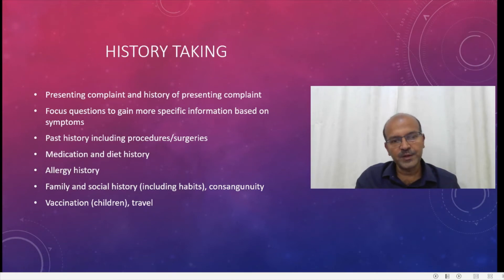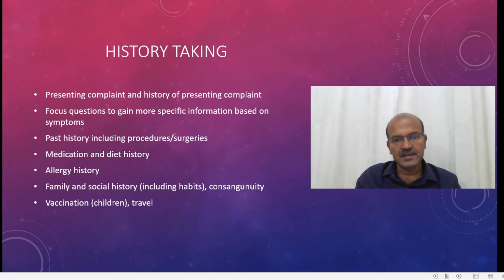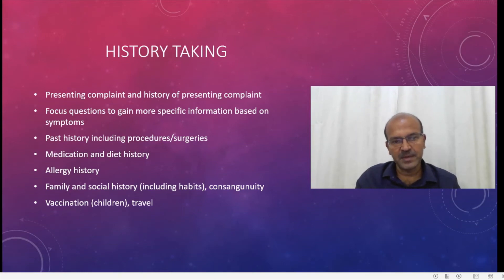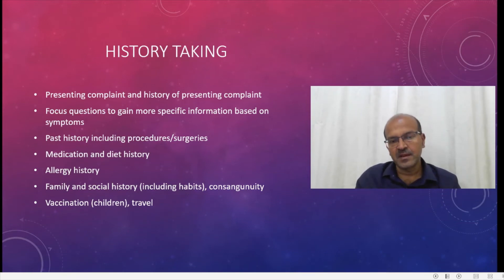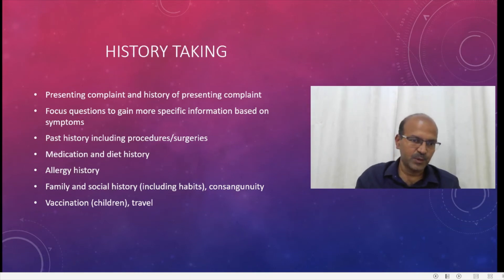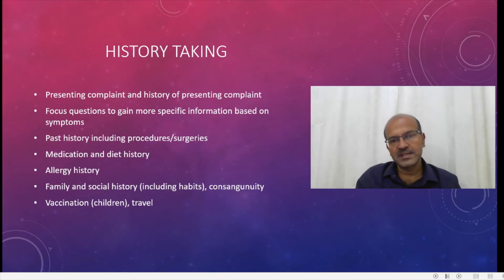You would also go into family and social history. In adults, you would ask about habits like alcohol, smoking, and drug abuse. Consanguinity is an important question when it comes to children, especially with malformations. Vaccination history is very important in children, and travel history is essential, especially given current epidemics and pandemics of diseases.